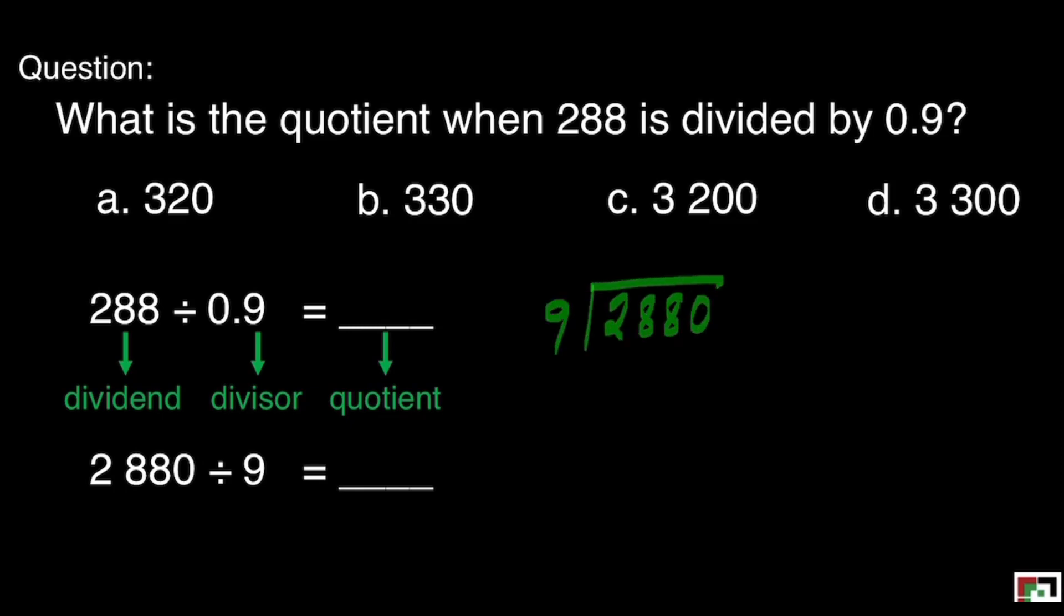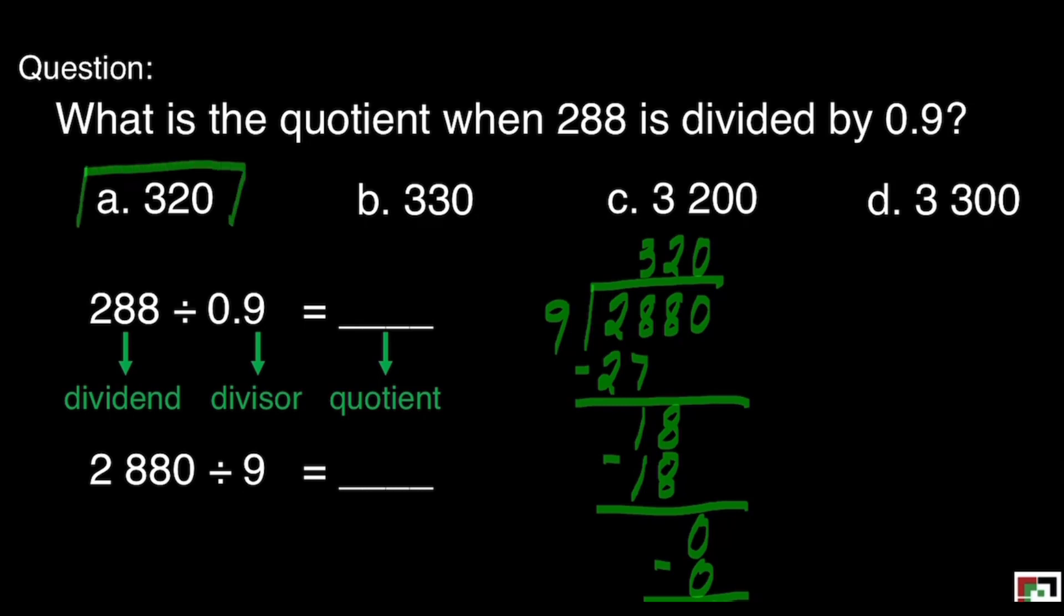How many 9's are there in 28? There's 3. 3 times 9 is 27. Subtract. 28 minus 27 is equal to 1. Bring down 8. How many 9's are there in 18? That's 2. 2 times 9 is equal to 18. Subtract. Then bring down 0. How many 9's are there in 0? That's 0. Our answer for this question is letter A, which is 320.